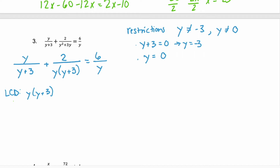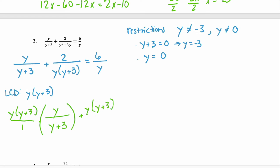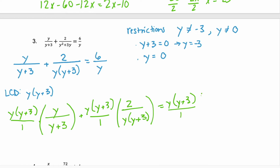The LCD is y times y plus 3, since those two factors represent all three denominators. We multiply every term by y times y plus 3 over 1. For the first term, y plus 3 simplifies and we have y squared. The second term was the LCD itself, so everything simplifies and we have plus 2. For the last term, y simplifies and we have 6 times y plus 3.